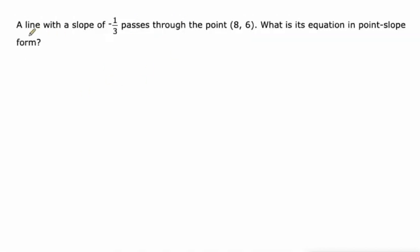Alright, so we've got a line with a slope of negative 1/3 and it passes through this point (8, 6). Okay, so let's go y minus our y value, which is 6, equals m, which is negative 1/3.